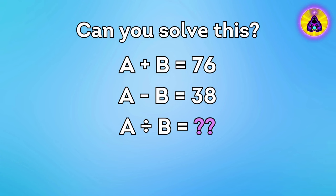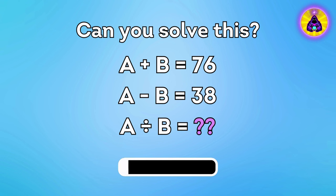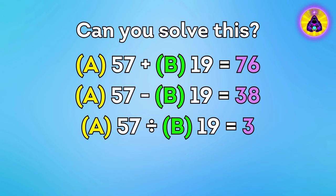Question 17. Now this is not easy at all. Can you solve this? Correct answer is three, because letter A is fifty-seven and letter B is nineteen.